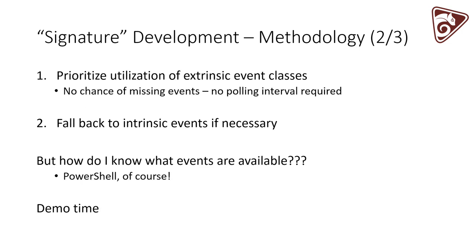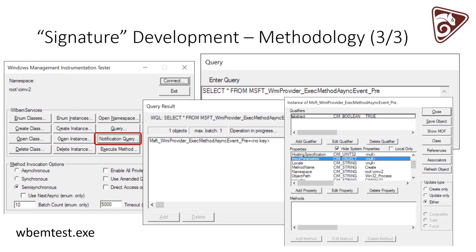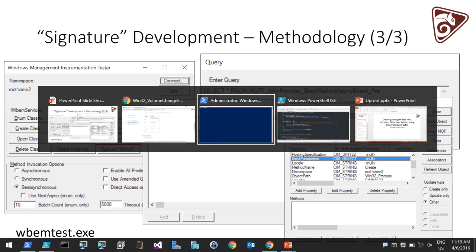If you've determined you really do want to use permanent WMI events, go through and discover all extrinsic events that exist first — those are ideal, they trigger immediately. If not, fall back to intrinsic events and be mindful of the polling interval. To determine what classes are available, we have PowerShell for that. In the latter portion of the demo, I'll show how to test events using WBEMTest — it's a super old-school tool with a terrible UI, but it's extremely useful.